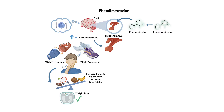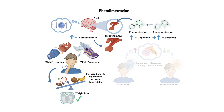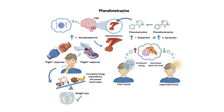Phendimetrazine also has indirect effects on other neurotransmitters, such as dopamine and serotonin. By increasing the levels of these neurotransmitters, phendimetrazine may improve mood and reduce the desire for food, particularly in those who experience emotional eating. However, it is important to note that phendimetrazine is intended for short-term use, as its appetite-suppressing effects tend to diminish over time, and there is a potential for dependence and abuse.